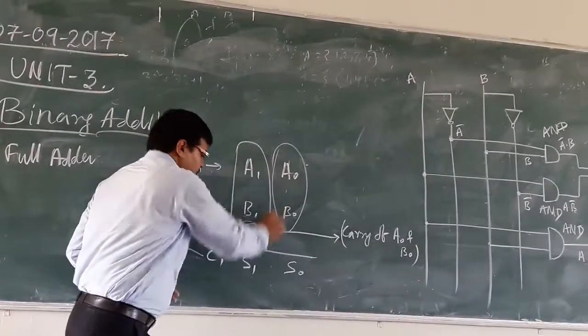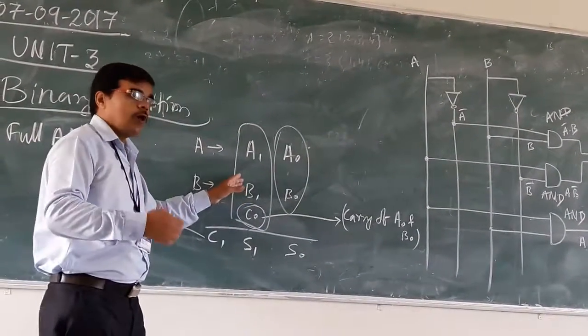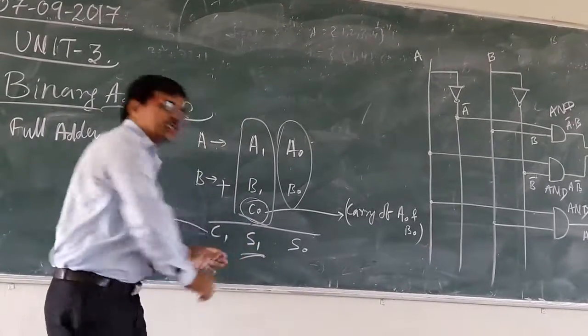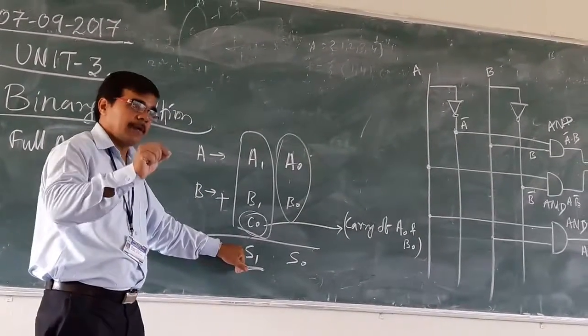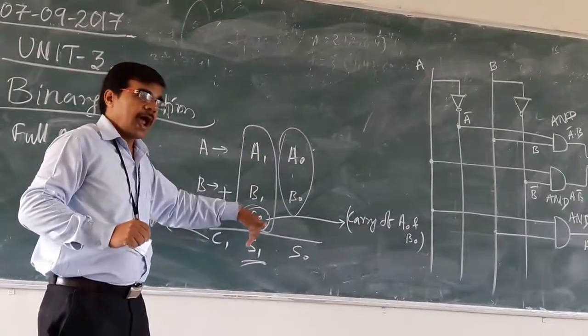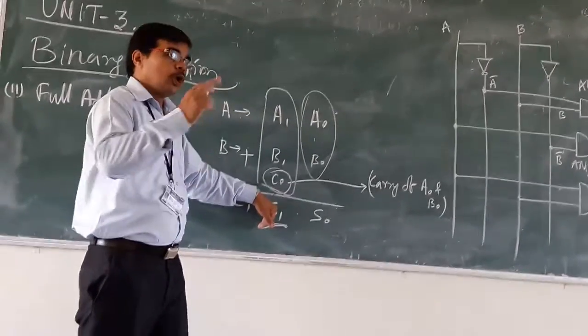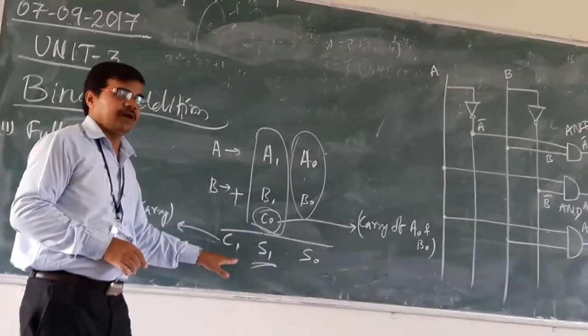So these three will become the input. And what is the output? At output, we will have S1. S1 is your sum. So it is sum of these three. And when we are doing the addition of these three, there are chances that you may have a carry. So that carry you are having C1.